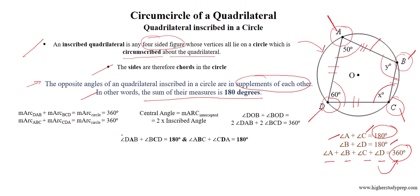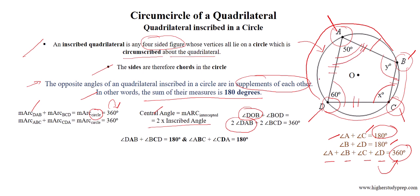The measure of an arc equals the measure of the central angle, which is equal to two times the inscribed angle. The measure of arc DAB plus the measure of arc BCD equals 360 degrees, which is the full circle. Therefore, arc DAB corresponds to central angle DOB equal to two times inscribed angle DAB, plus two times inscribed angle BCD with respect to central angle BOD.